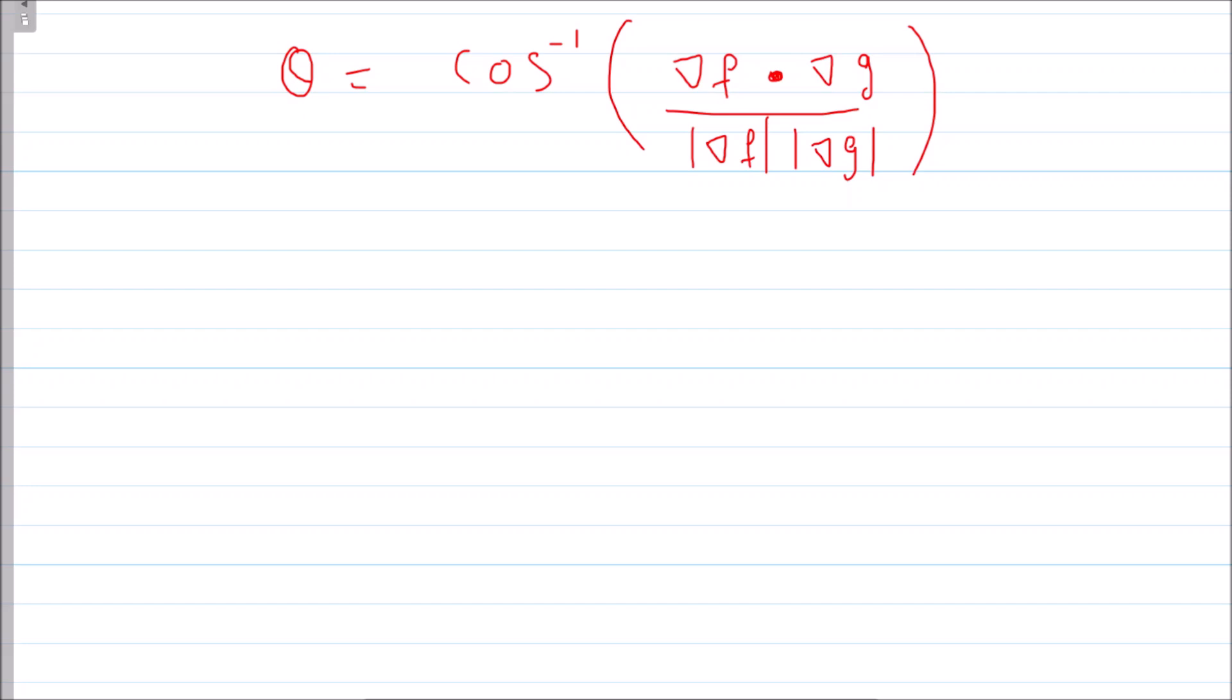So what is the formula? It is cos inverse of grad f. This over here is nothing but the dot product, and here you have the normal multiplication. This is our usual multiplication. So this is the formula.